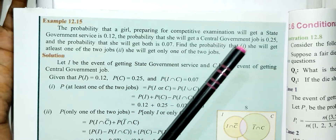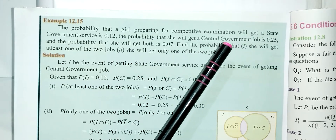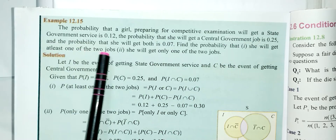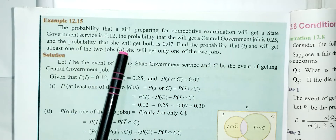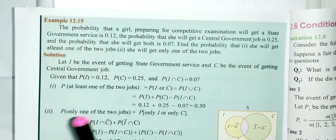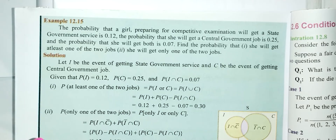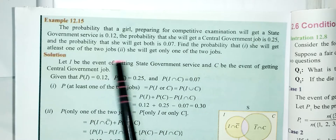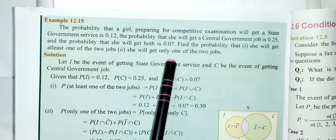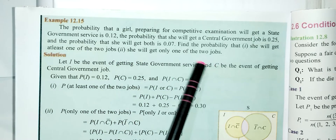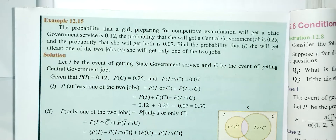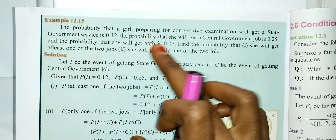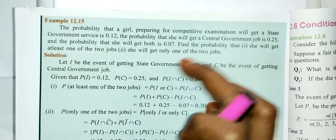Find the probability of: (i) she will get at least one of the two jobs, and (ii) she will get only one of the two jobs.